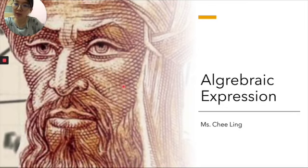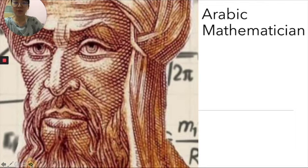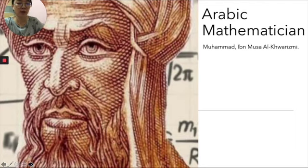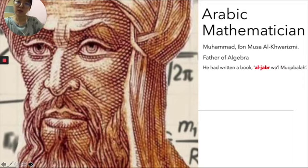What is algebra and who invented it? Let me introduce him to you. He is an Arabic mathematician and his name is Muhammad ibn Musa al-Khwarizmi. He is the father of algebra and he has written a very famous book called Al-Jarb wa Muqabala.